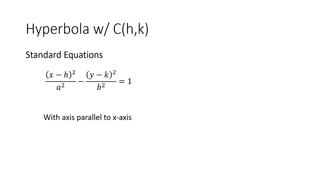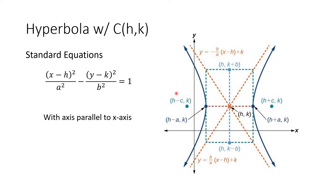Let us first talk about the hyperbola with center at (h, k) wherein the axis is parallel to the x-axis. The two curves of our hyperbola are facing to the left and right. The two vertices and two foci are all aligned horizontally, so their axis is parallel to our x-axis. From our center, the movement to our vertices is horizontal with a distance of a, so we add or subtract a from our h to get the coordinates of our vertices: (h minus a, k) and (h plus a, k).